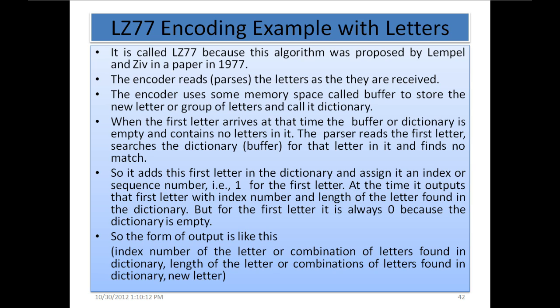In the last lecture we learned about Lempel-Ziv coding and its method of encoding. Now we are going to go through another example of Lempel-Ziv encoding with letters. In the previous example we used bits — ones and zeros — to explain the method of encoding. Now we are going to use letters instead. This is called LZ77 because this algorithm was proposed by Lempel and Ziv in a paper in 1977.